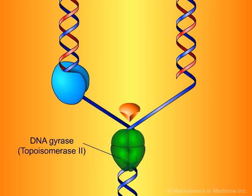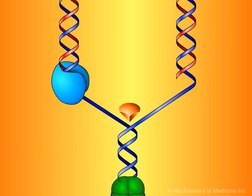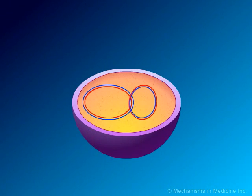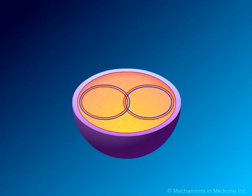DNA gyrase is an essential bacterial enzyme composed of 2A and 2B subunits, which are products of the GYRA and GYRB genes. This enzyme has other important functions which affect the initiation of DNA replication and transcription of many genes. With the combined involvement of these enzymes, an entire duplicate copy of the bacterial genome is produced as the two replication forks move in opposite directions around the circular DNA genome.